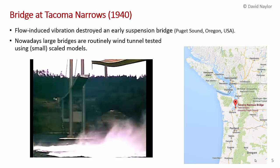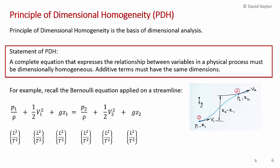Nowadays, such large bridges would be routinely tested in wind tunnels like the boundary layer wind tunnel to avoid this kind of problem. In an upcoming video, we'll talk about how you can use dimensional analysis to scale up results from a small scale model in a wind tunnel to a full scale structure. So now we'll move on to the mathematics of dimensional analysis. Before we can do that, I want to review the Principle of Dimensional Homogeneity, PDH for short.